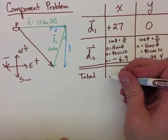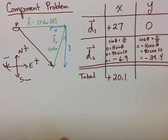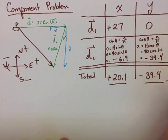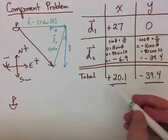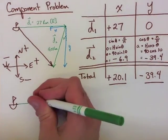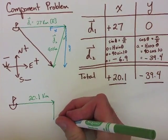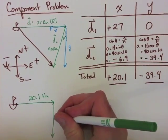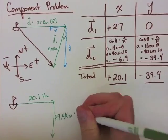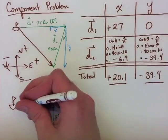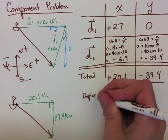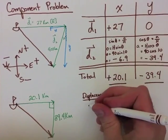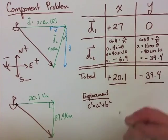When we add all these values together to find our totals, we get our x to be positive 20.1, and our y to be negative 39.4. We can now make a new vector with our x and y components. We put our x in at 20.1 to the positive direction, which is east, and our y negative 39.4, which is to the south because it's a negative direction, and then we find our final vector. Now we can use Pythagorean theorem and SOHCAHTOA, just as we did at the beginning of this unit.